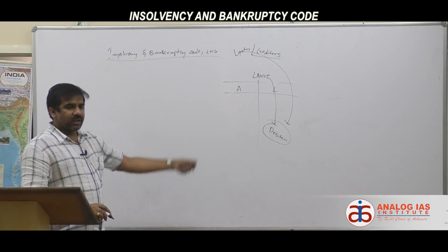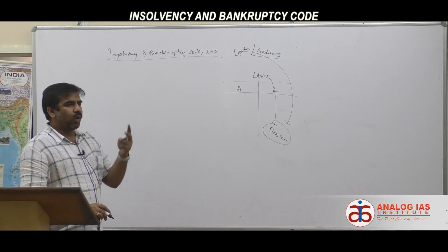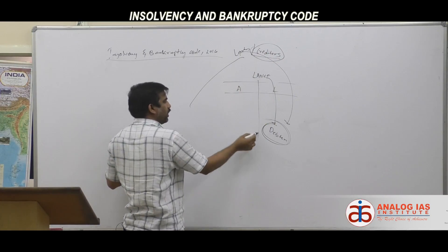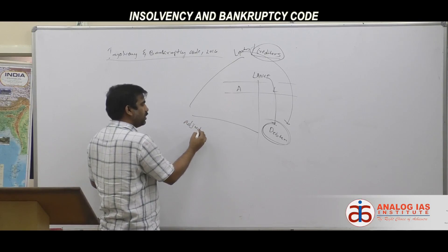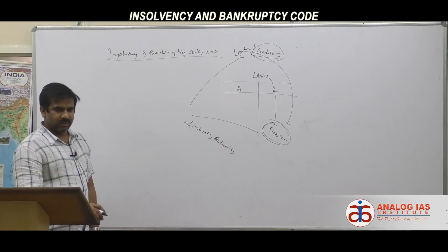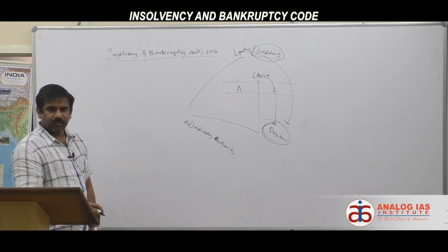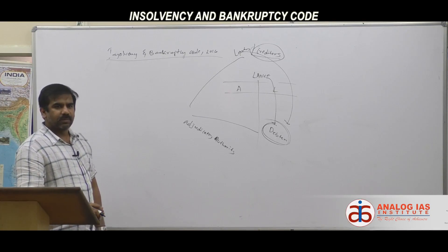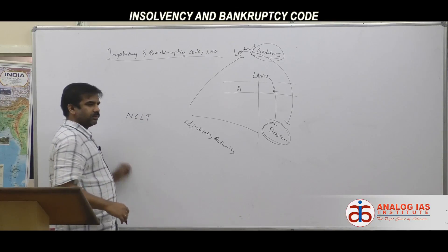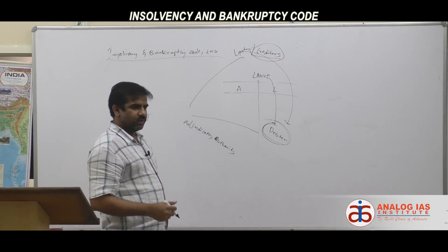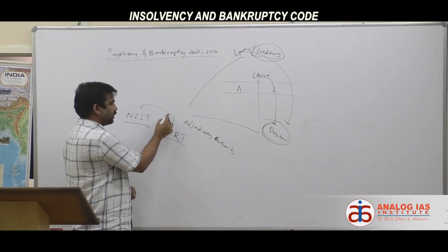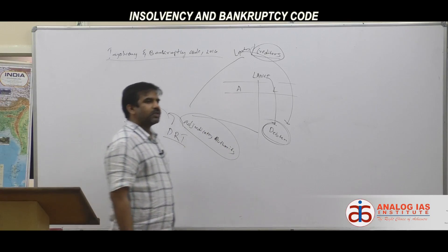When a company experiences insolvency or bankruptcy, either the creditors or the debtors can move to an adjudicating authority to resolve the issue. For a company, that adjudicating authority is the National Company Law Tribunal (NCLT). For an individual or a partnership firm, one must approach the Debt Recovery Tribunal (DRT).